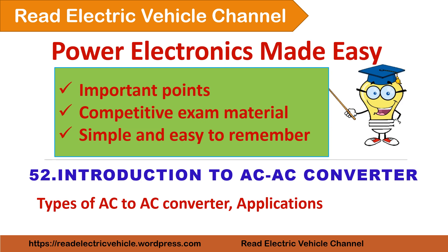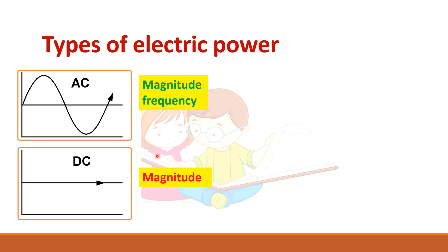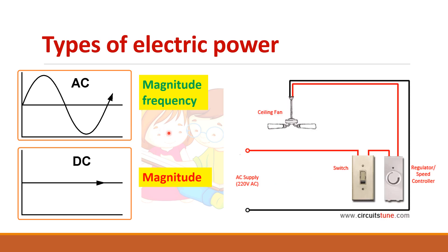In this video we will see about AC to AC converters. There are two types of electric power — AC and DC. AC is represented by its magnitude and frequency, while DC is represented only by its magnitude because its frequency is zero.